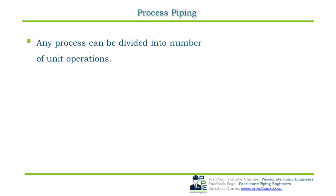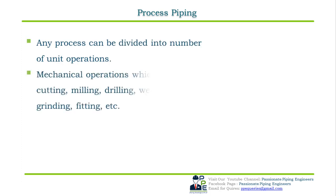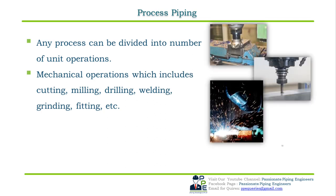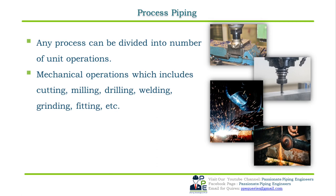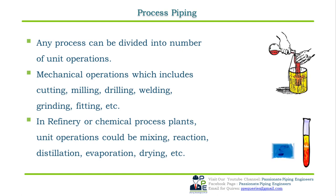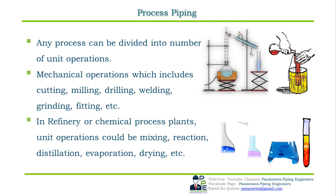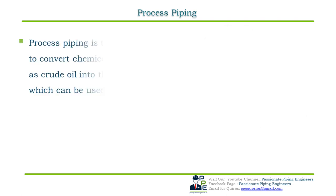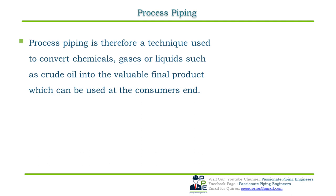Any process can be divided into a number of unit operations — just like in mechanical operations which include cutting, milling, drilling, welding, grinding, and fitting. In a refinery or chemical process plant, unit operations could be mixing, reaction, distillation, evaporation, drying, etc. Process piping is therefore a technique used to convert chemicals, gases, or liquids such as crude oil into a valuable final product which can be used at the consumer side.